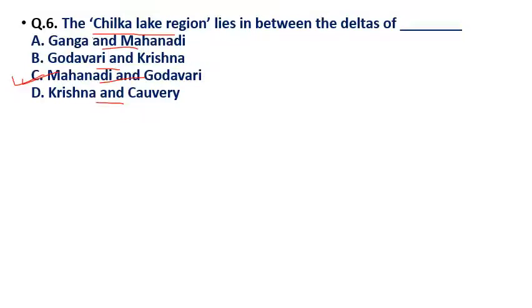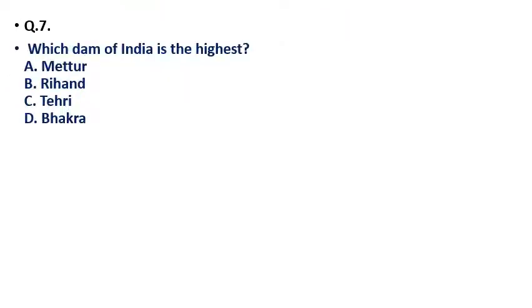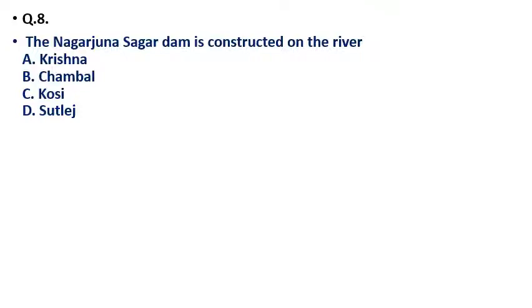Please recall the questions from time to time so that you can get a clear idea of these important topics. Question 7: Which dam in India is the highest? Options: (a) Mettur Dam, (b) Dihan Dam, (c) Tehri Dam, (d) Bhakra Dam. The correct answer is option C — Tehri Dam.